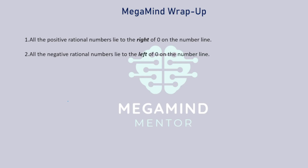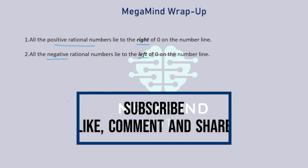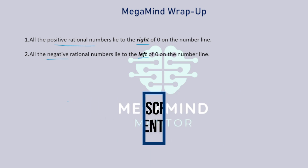So what have we learned? All positive rational numbers lie to the right of 0 on the number line, and all negative rational numbers lie to the left of 0. Hope this video was helpful. In the upcoming videos, we are going to do the next exercises of the same chapter, so stay tuned. Do consider subscribing to my channel. Thank you so much for watching. See you in the next video.